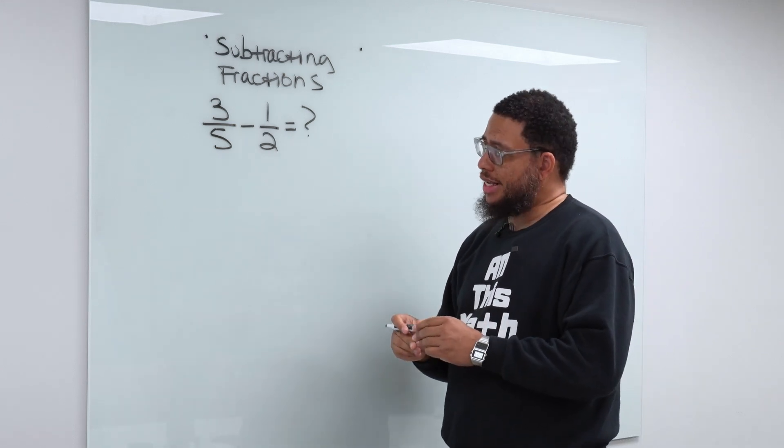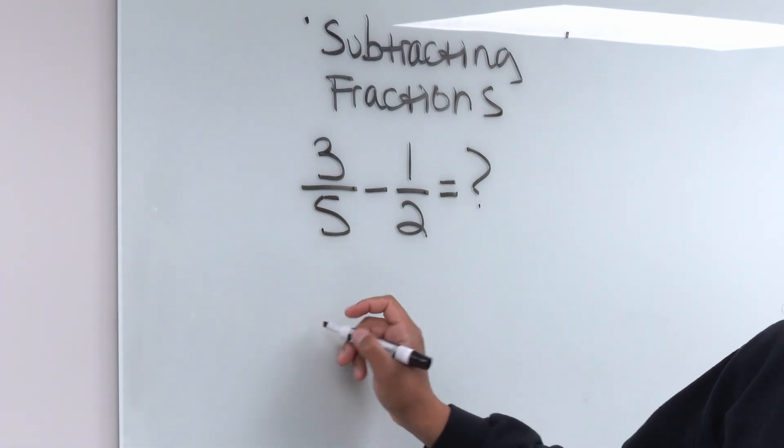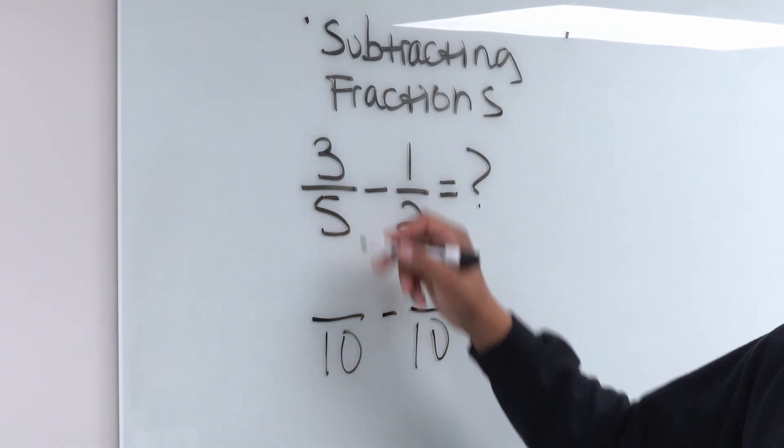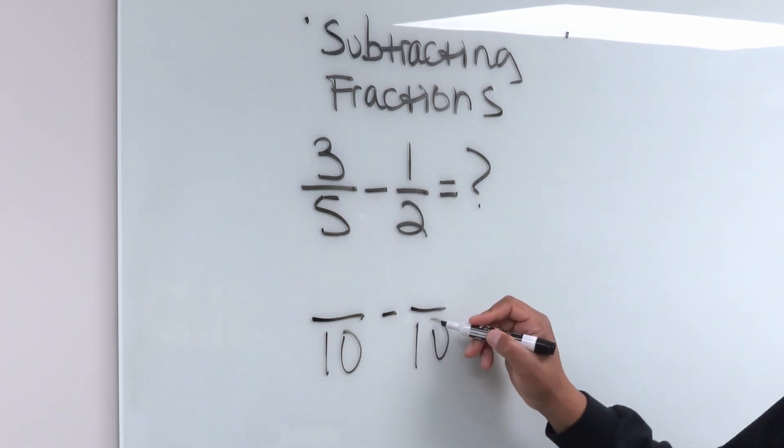And also, what this does is it gives us the least common denominator because 10 is the smallest number that five can multiply into and two can also multiply into.